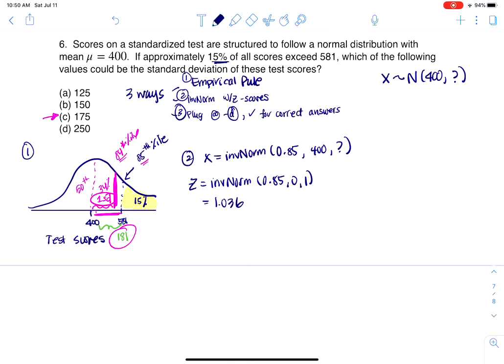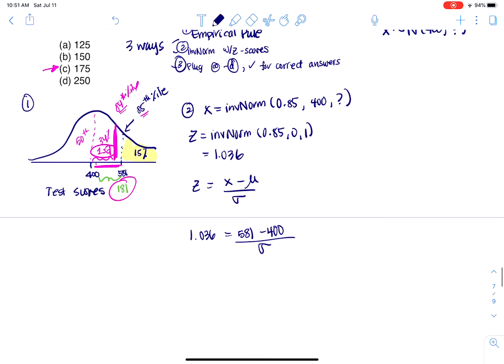And we know that the Z score formula is always value minus mean over standard deviation. So what I have here is that 1.036 is going to equal this value of 581 minus the mean of 400 over this standard deviation that I'm looking for. And when I crunch this algebraically, and I'm going to scooch this up for just a bit, I get 1.036, that's going to equal 181 over sigma. I'm going to multiply both sides by sigma, but divide by 1.036. So when I do 181 divided by 1.036...